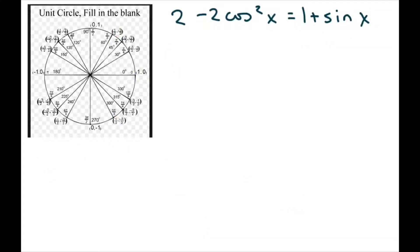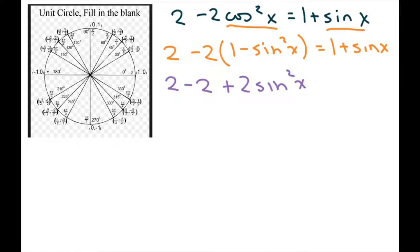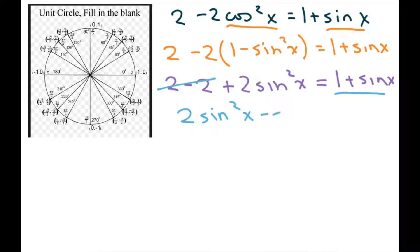Next problem — same approach. Since this one involves sine, I'll write cosine squared of x as 1 minus sine squared of x and substitute. Simplifying gives: 2 minus 2 plus 2 sine squared of x equals 1 plus sine of x. The 2 minus 2 cancels, so moving terms to the left gives 2 sine squared of x minus sine of x minus 1 equals 0.